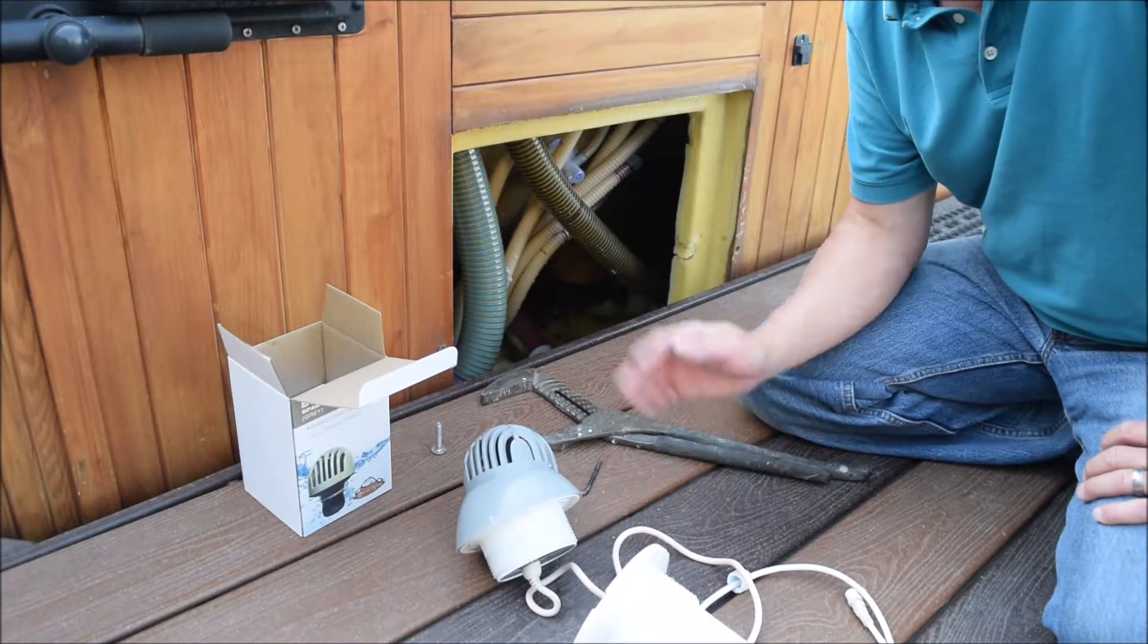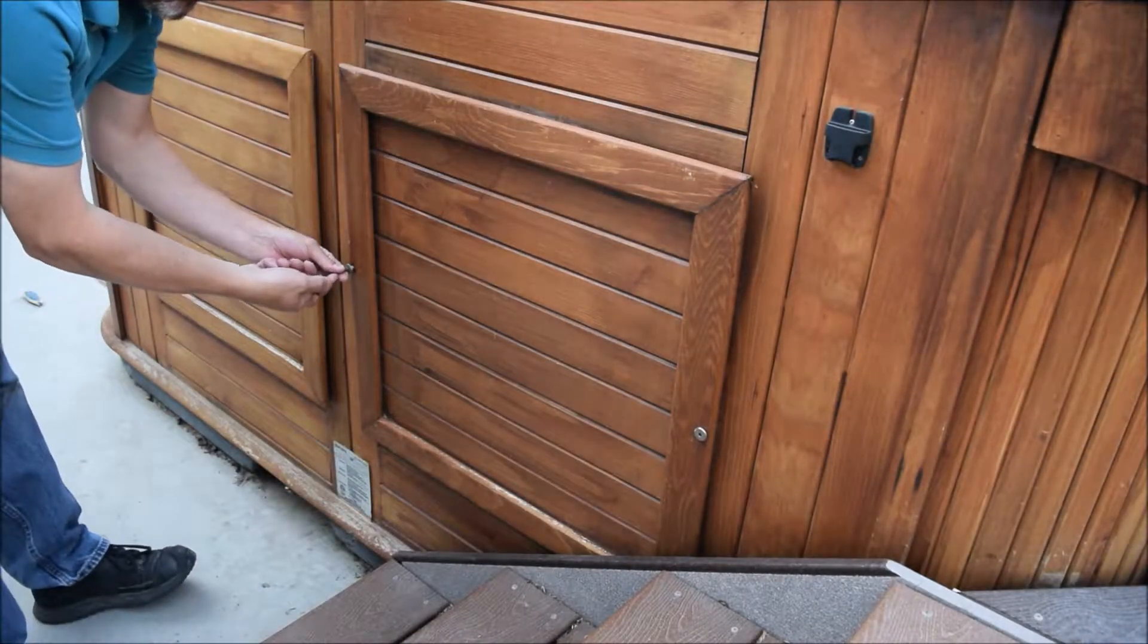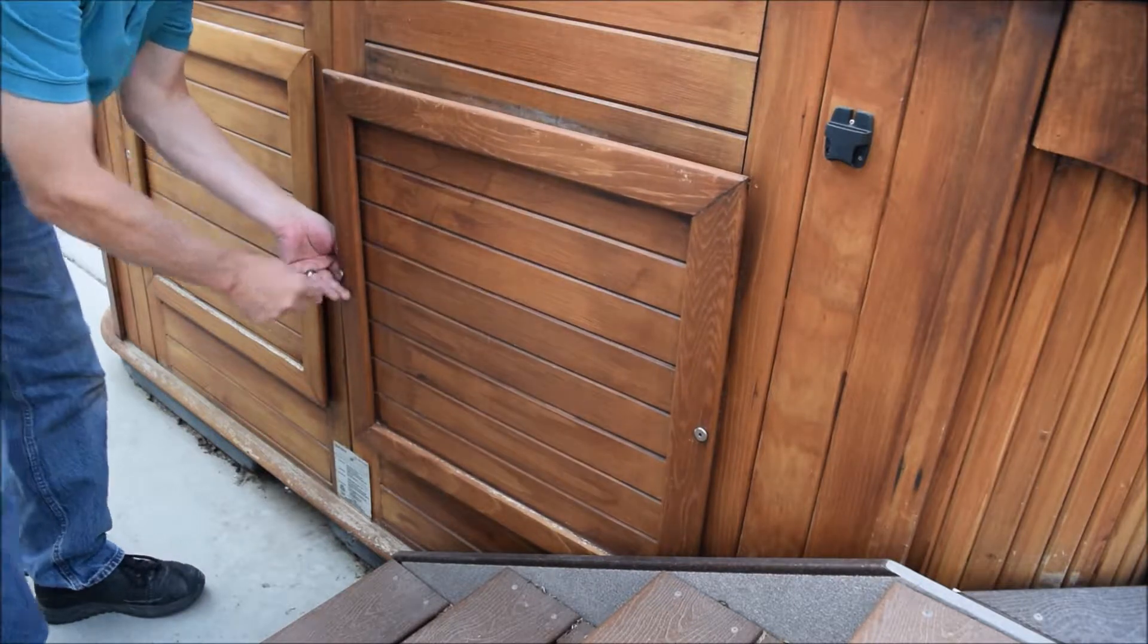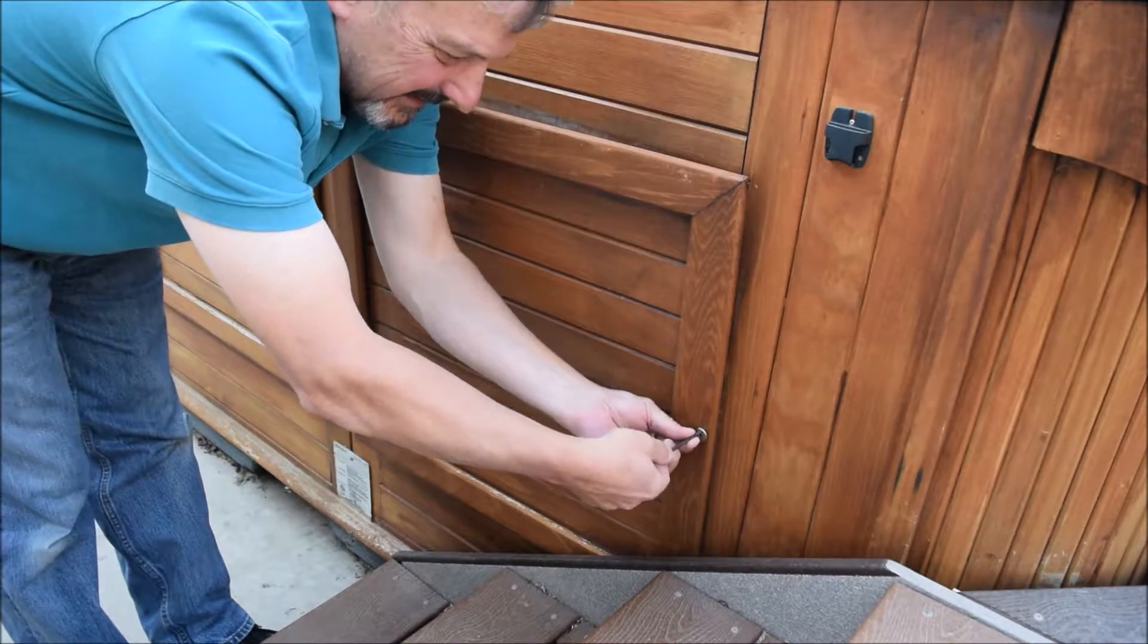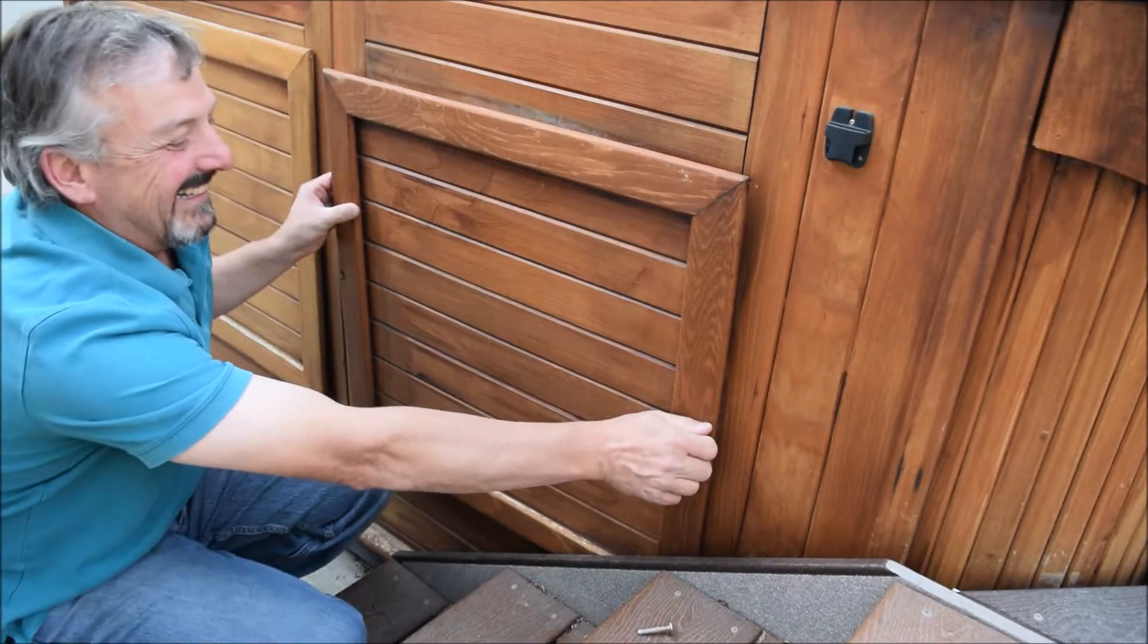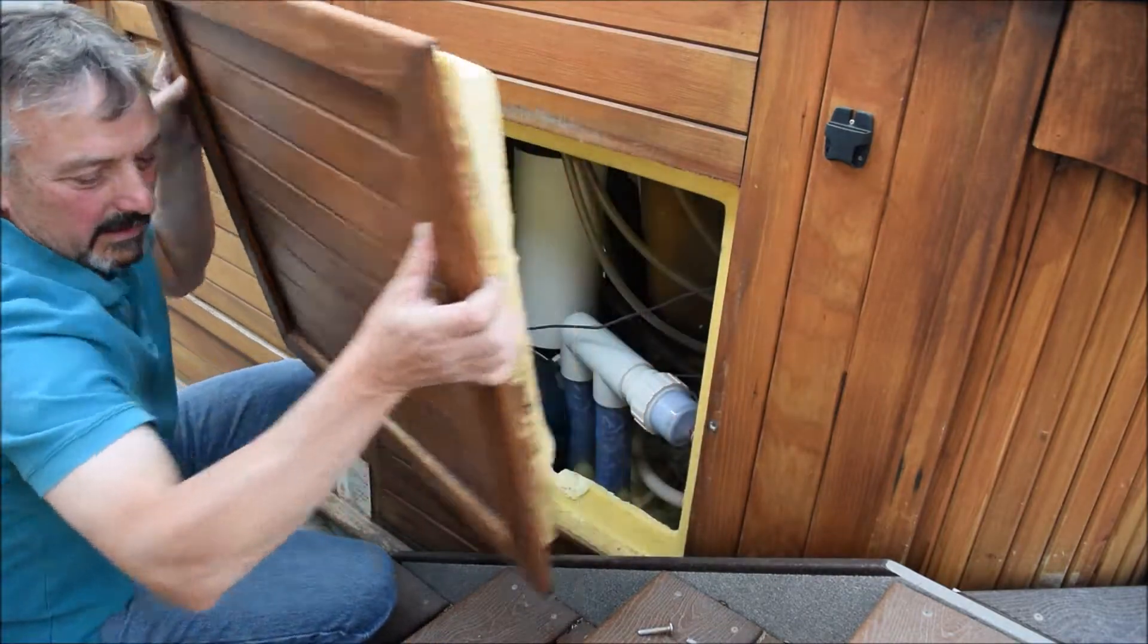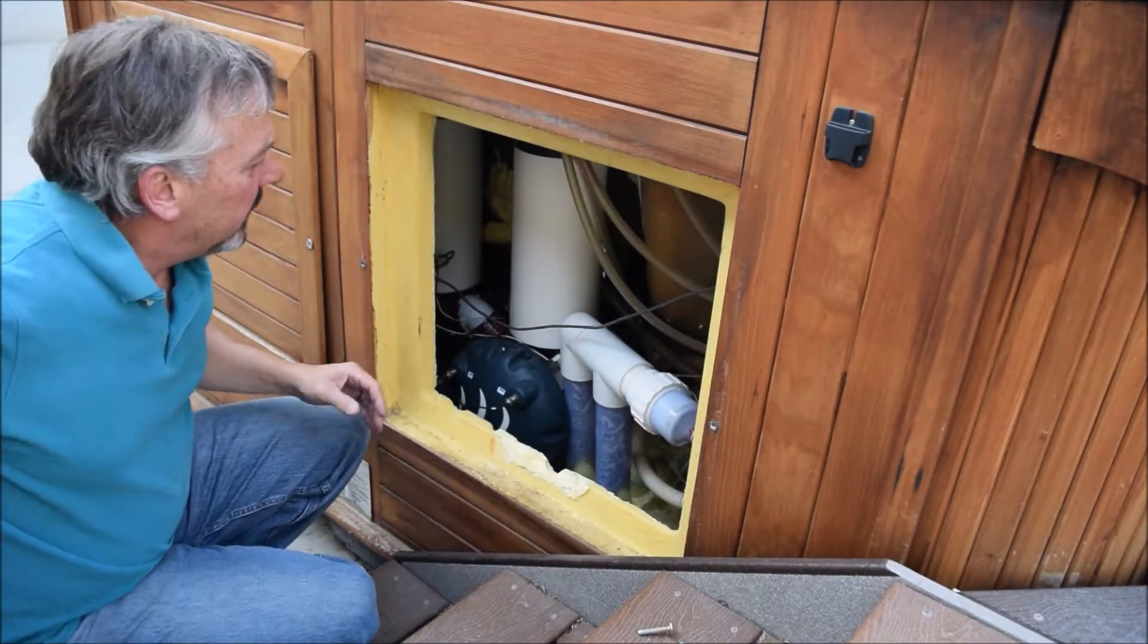Right here, these are the hex bolts. Be careful with them because they just go into the wood into little metal nut inserts. Pull the wall off, and from this cavity you can reach in and find the cord.